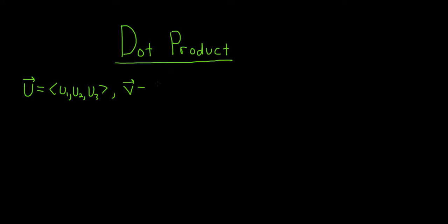And say we have another vector v, and this is v sub 1, v sub 2, and v sub 3. Then we define the dot product as follows. The notation is u, and it's actually a dot. That's why it's called the dot product. So it's u dot v.